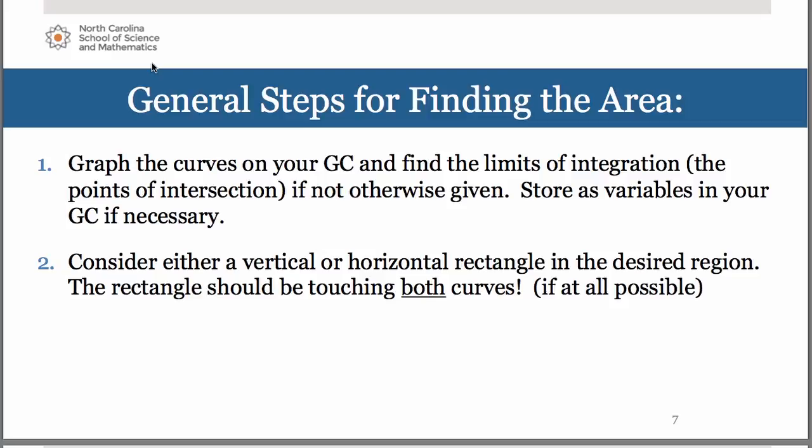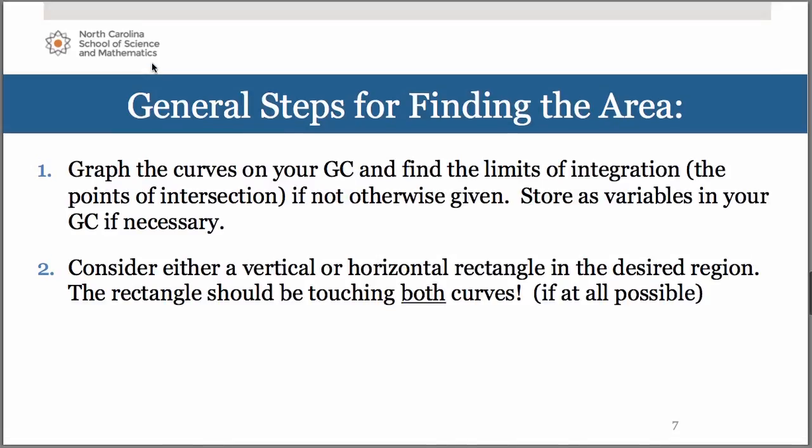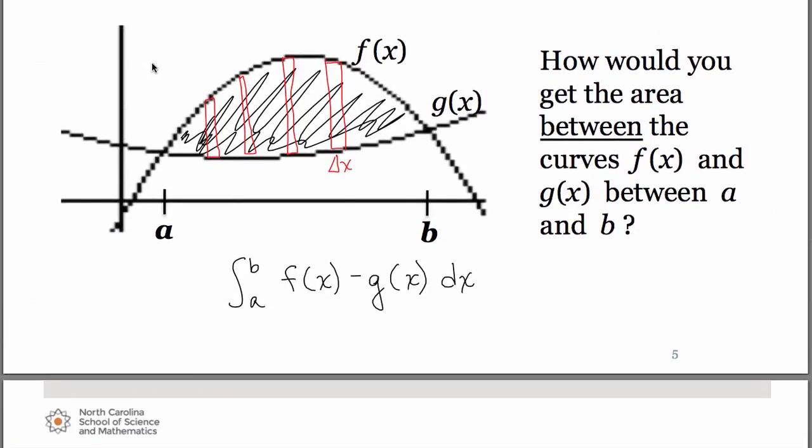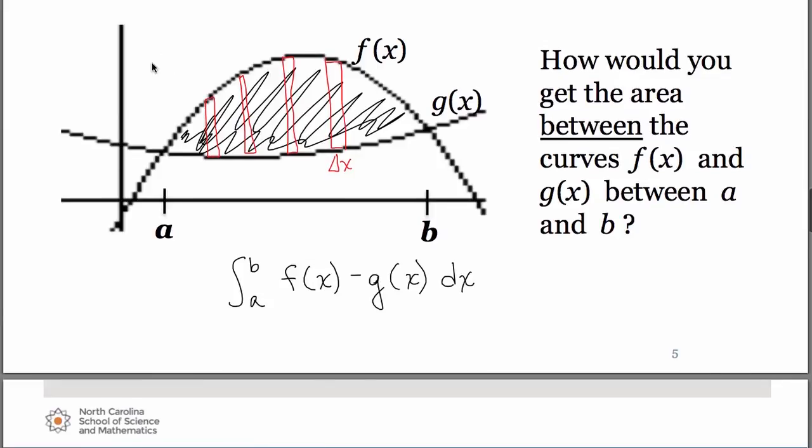Then you'll have to consider either a vertical or horizontal rectangle in that desired region. I like to think of it as a representative rectangle. Go back to the previous picture if you would. In this case, we had vertical representative rectangles. Sometimes it's helpful to think of the orientation of what one single rectangle would look like when you go to do a problem like this.